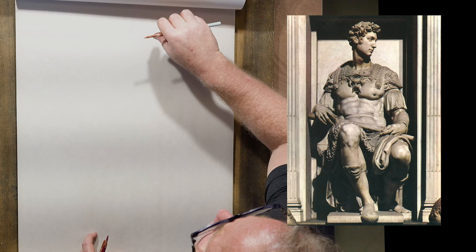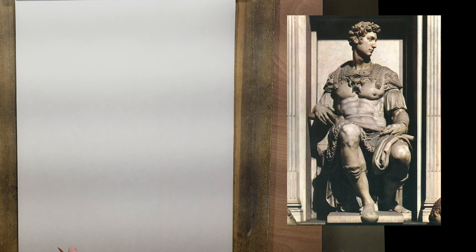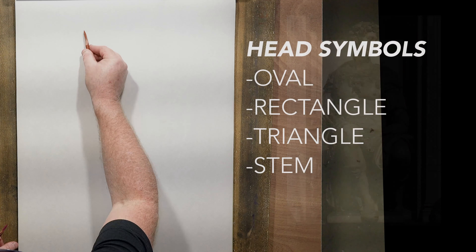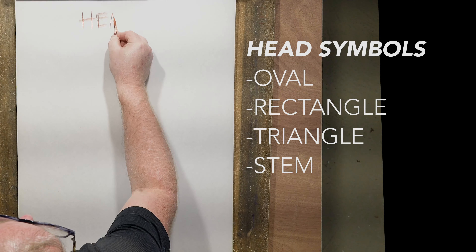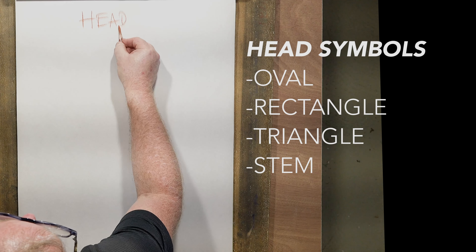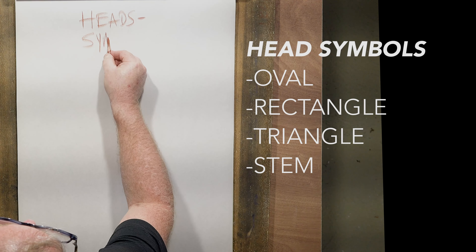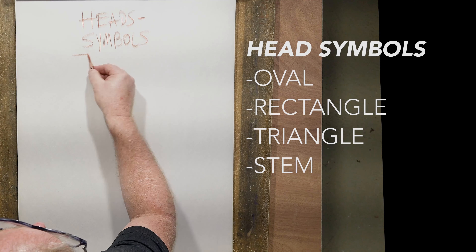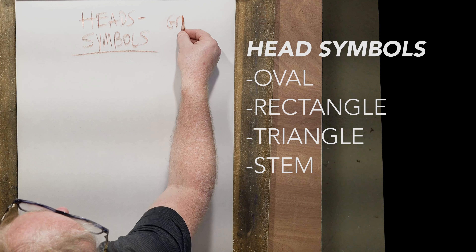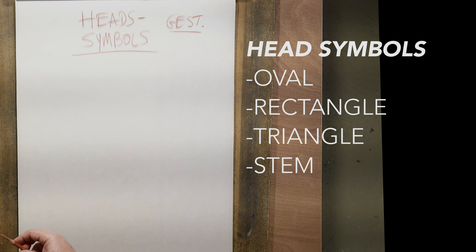Let's talk about heads and head changes. With heads in gesture, we're talking about symbols — gesture and head symbols. The clearest communication, and the one we use most often, is the simple oval.